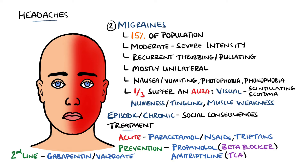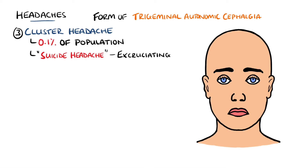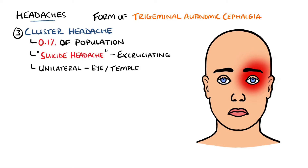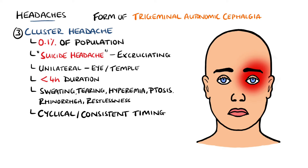Cluster headaches come under the category of trigeminal autonomic cephalgia. These headaches are named suicidal headaches and are known for the excruciating pain associated with them. They are unilateral headaches, often around the eye or temple region, characterised by a short duration of below 4 hours. Associated findings include sweating, tearing, hyperemia, ptosis, and rhinorrhea, as well as severe restlessness. The attacks tend to happen at roughly the same time during the day, which is why they are sometimes called alarm clock headaches, and are often precipitated by drinking alcohol.